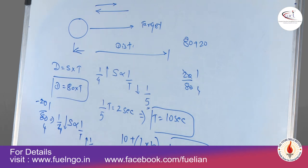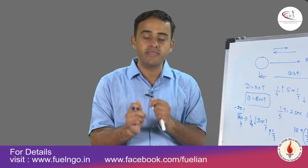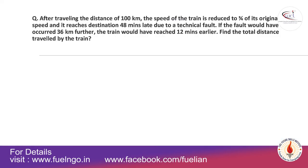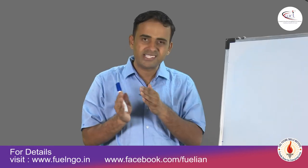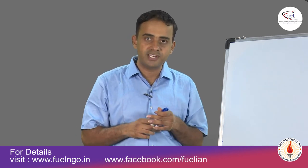These three cases cover: wind not moving, wind moving in the same direction, and wind moving in the opposite direction. In the previous three questions, distance was the constant factor. The next problem: after traveling 100 km, the speed of the train is reduced to 3/4 of the original speed due to a technical fault and it reaches the destination 48 minutes late. If the fault had occurred 36 km further, the train would have reached 12 minutes earlier. Find the total distance.